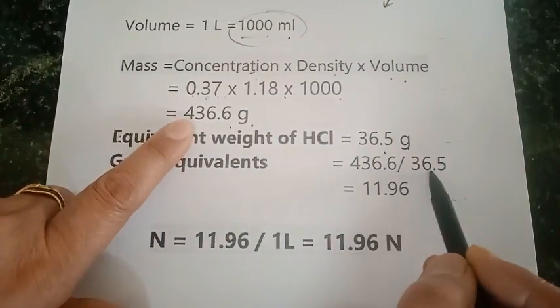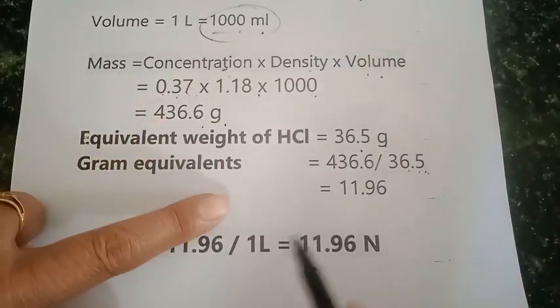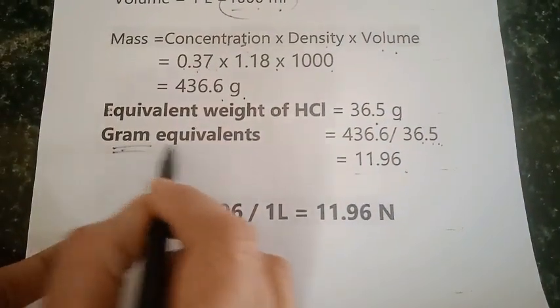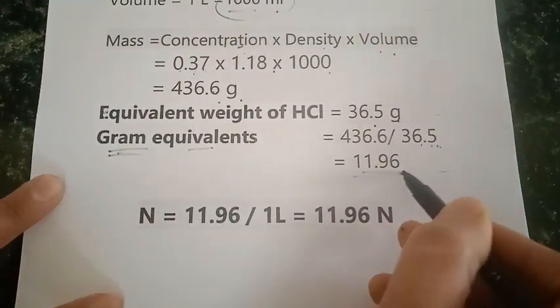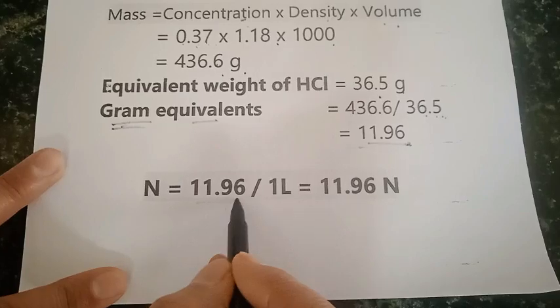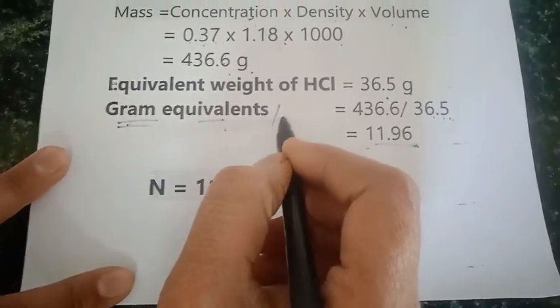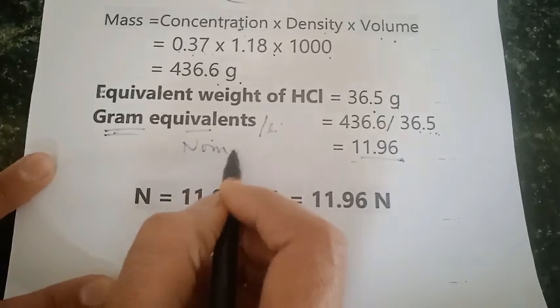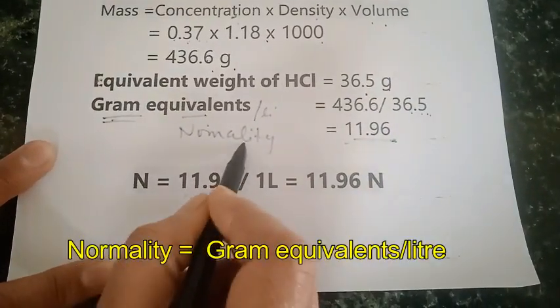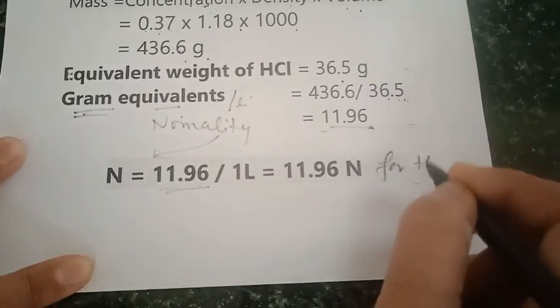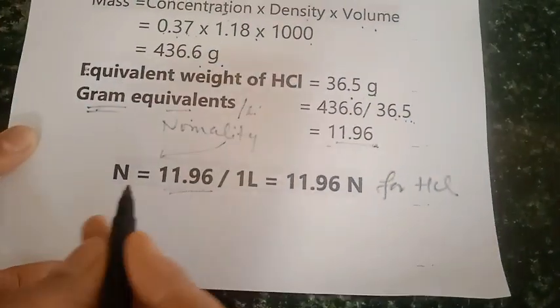And now I am going to divide the mass which we have calculated with its equivalent weight and this is in gram equivalents per liter because we have taken volume 1000 ml. So this is called normality of the solution. So normality is equal to 11.96 divided by 1 liter is equal to 11.96 N for HCl.